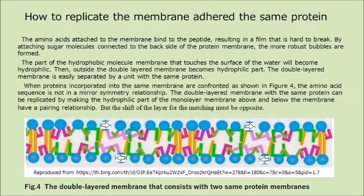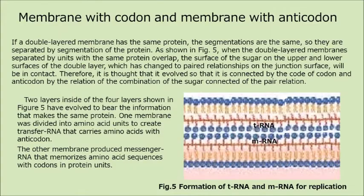But the shift of the layer for the matching must be opposite. If a double-layered membrane has the same protein, the segmentations are the same, so they are separated by segmentation of the protein. As shown in figure 5, when the double-layered membrane separated by units with the same protein overlap, the surface of the sugar on the upper and lower surfaces of the double layer, which has changed to paired relationships on the junction surface, will be in contact. Therefore, it is thought that it evolved so that it is connected by the code of codon and anticodon by the relation of the combination of the sugar connected in a paired relationship.